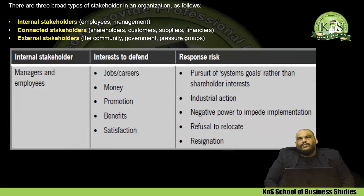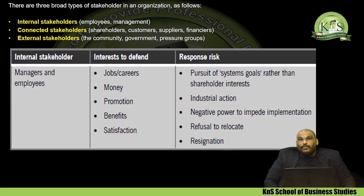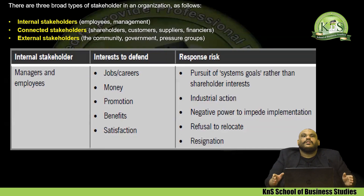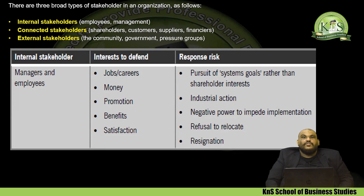Internal stakeholders — managers and employees — have certain interests aligned with the business. These include their jobs, promotions, bonuses, benefits such as a company car, company accommodations, insurance, pension, and overall job satisfaction. These are all the interests that managers and employees want from their business. If these interests are threatened, they will pursue their own goals.